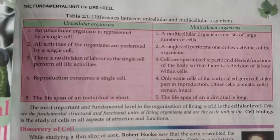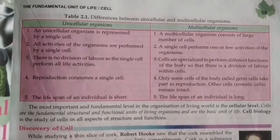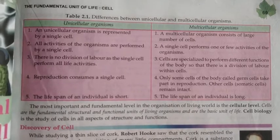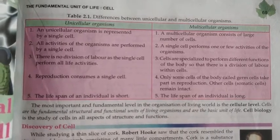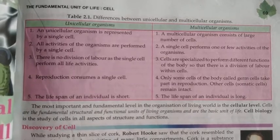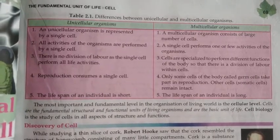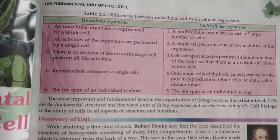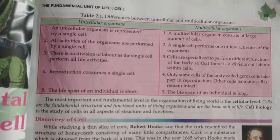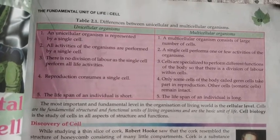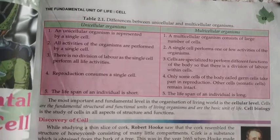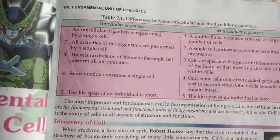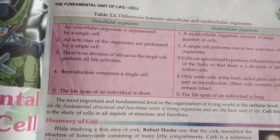In a unicellular organism, all life activities are performed by a single cell only. In multicellular organisms, many cells join together and perform a single function. So in unicellular organisms there is no division of labor, as a single cell performs all the functions of the organism.